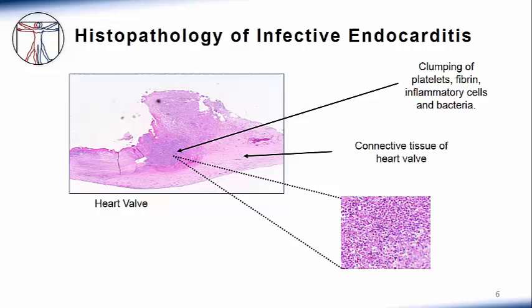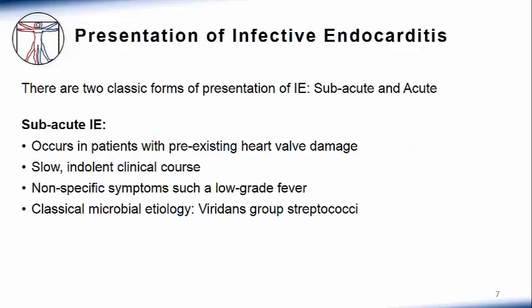Under the microscope, the vegetation or lesion on the heart valve leaflet typically shows fibrin, platelets, inflammatory cells, and masses of bacteria. There may be destruction of the heart valve, such as perforation of the leaflet or rupture of the chordae tendineae. There may also be an abscess on the valve or other cardiac structures. Pictured here is a section of a heart valve with clumping of platelets, fibrin, and inflammatory cells and bacteria, seen as a dense dark purple spot in the middle of the heart valve, along with regular connective tissue at the bottom, seen as a smooth pink surface.